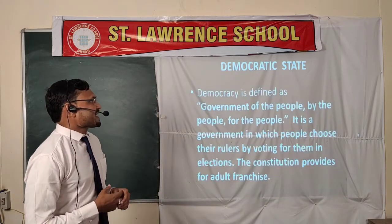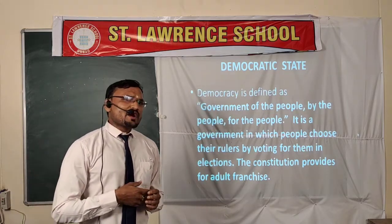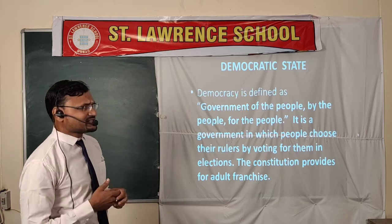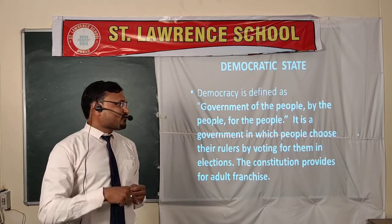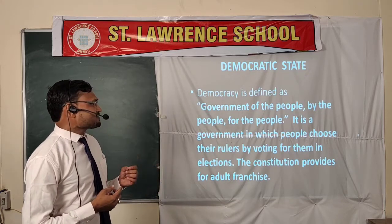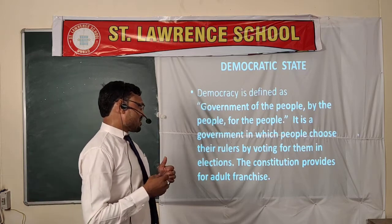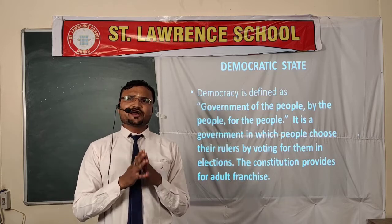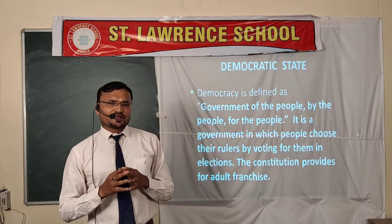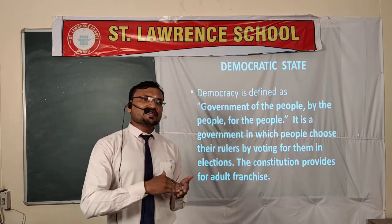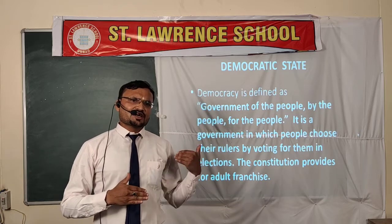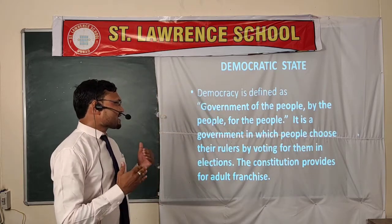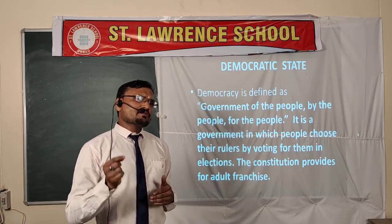Next is the Democratic State. As defined by Abraham Lincoln, the former president of the USA: government of the people, by the people, for the people. It is a government in which people choose their rulers by voting for them in elections. The Constitution provides for adult franchise, meaning all people who have attained the age of 18 years are given the right to vote. They register their names on the voting list, and every five years at the state and central level, there is an election in which all citizens aged 18 and above can choose their government.